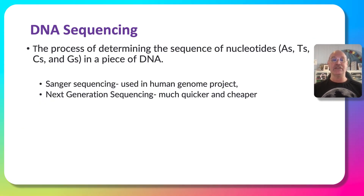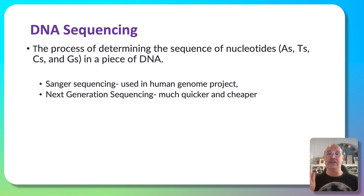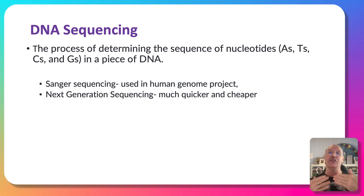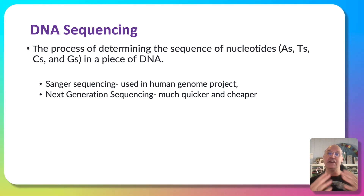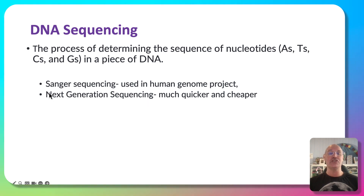This brings us to DNA sequencing — the process of working out the sequence of nucleotides in a genome. The Human Genome Project took about 20 years and cost billions of dollars. Now, with next generation sequencing and third generation sequencing, the process is much quicker, more affordable, and more portable, opening up tremendous opportunities. We'll look first at Sanger sequencing, which was used in the Human Genome Project.